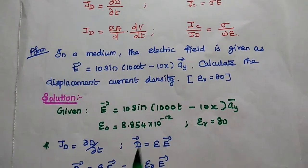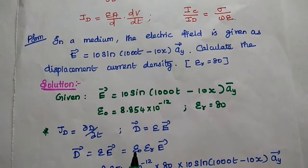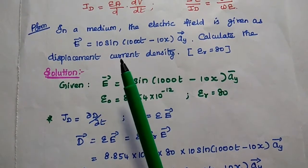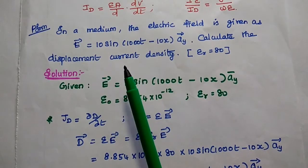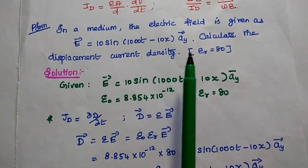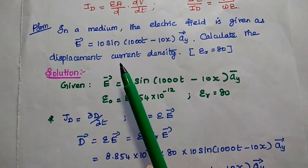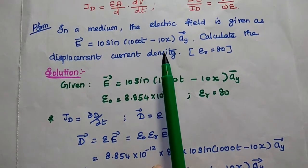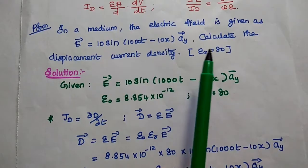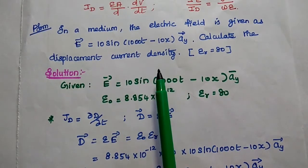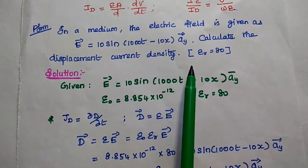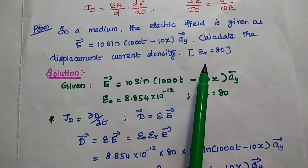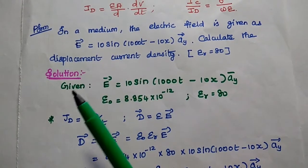Let's solve some problems in displacement current and displacement current density. The first problem: in a medium, the electric field is given as E = 10 sin(1000T − 10X) aY. Calculate the displacement current density. Here, the relative permittivity epsilon R is equal to 80.